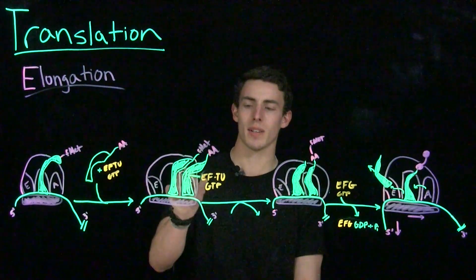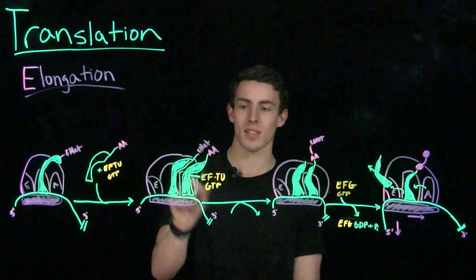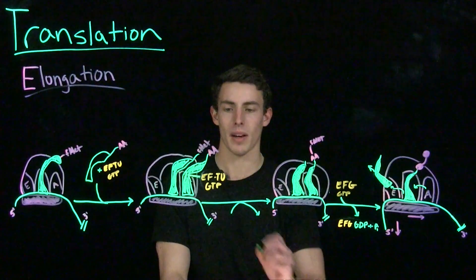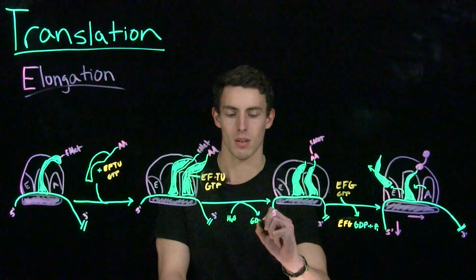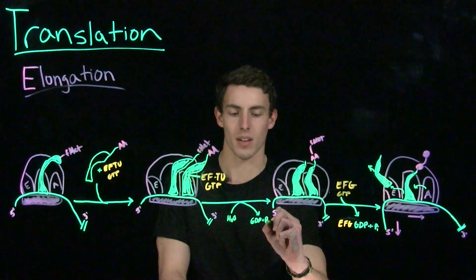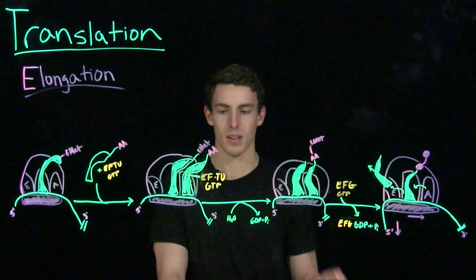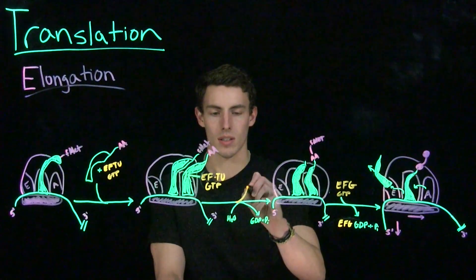Our charged tRNA is going to bind to the A site of the 70S complex. At a certain point, we're going to hydrolyze this GTP to GDP and an inorganic phosphate. At that point, our EFTU is going to leave.